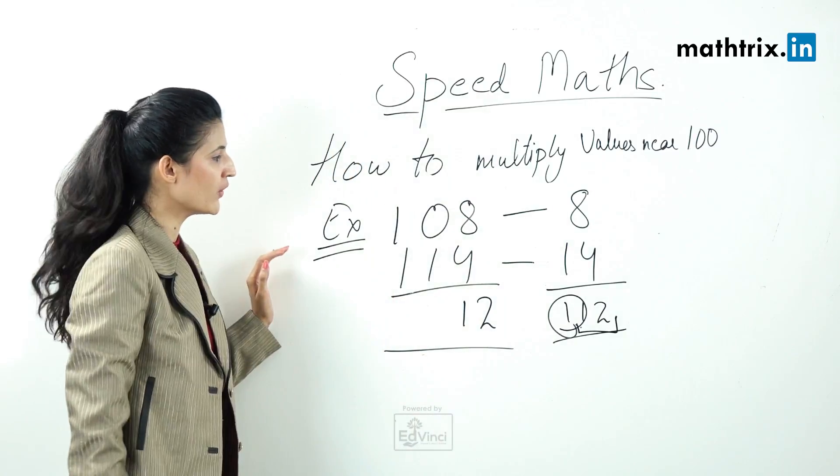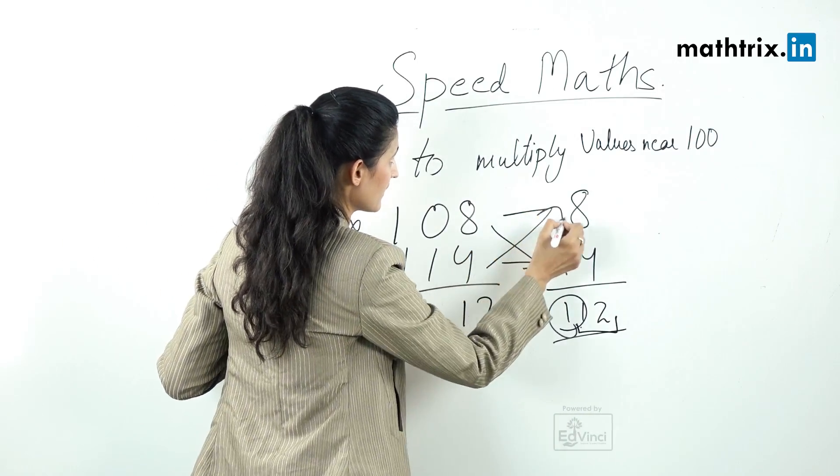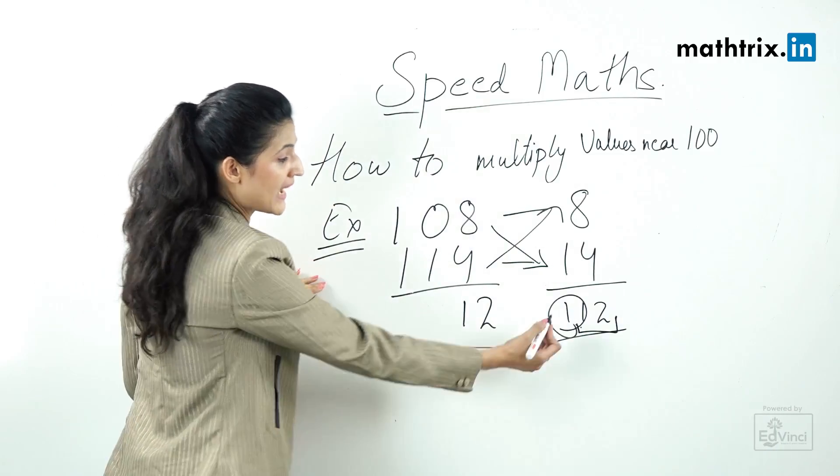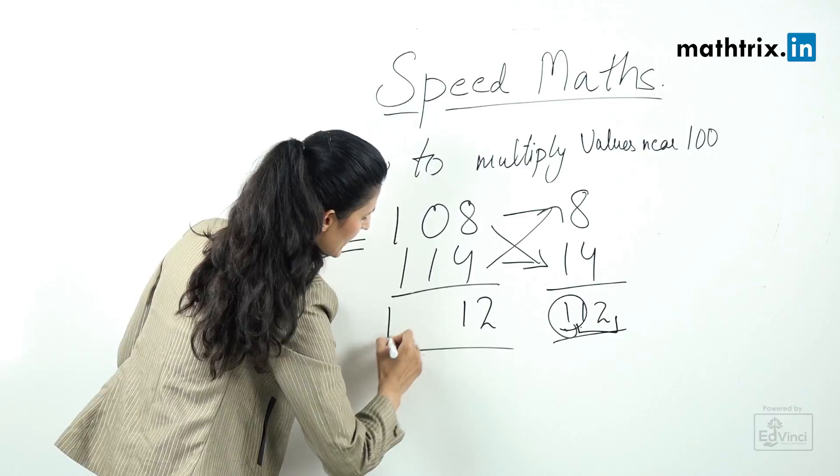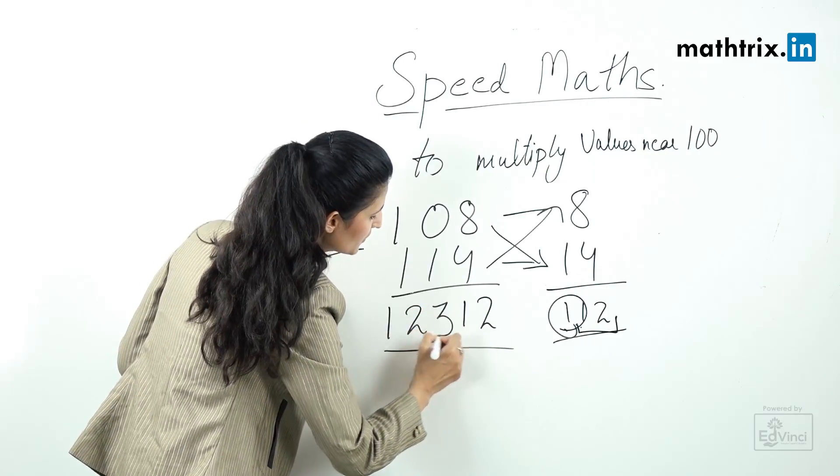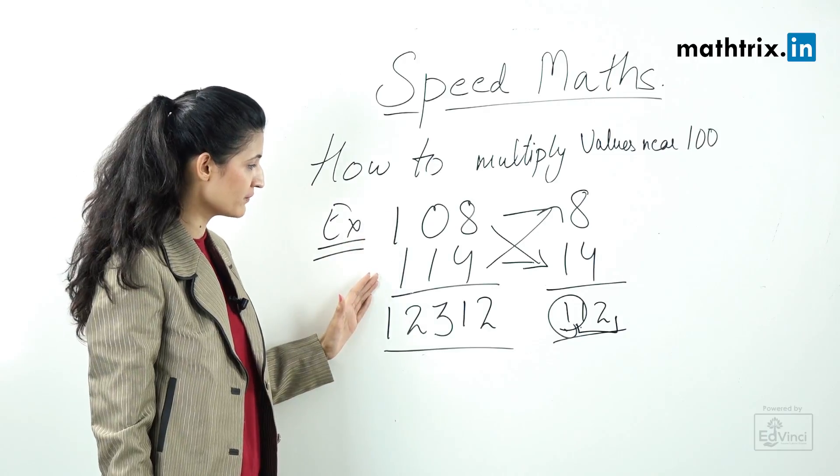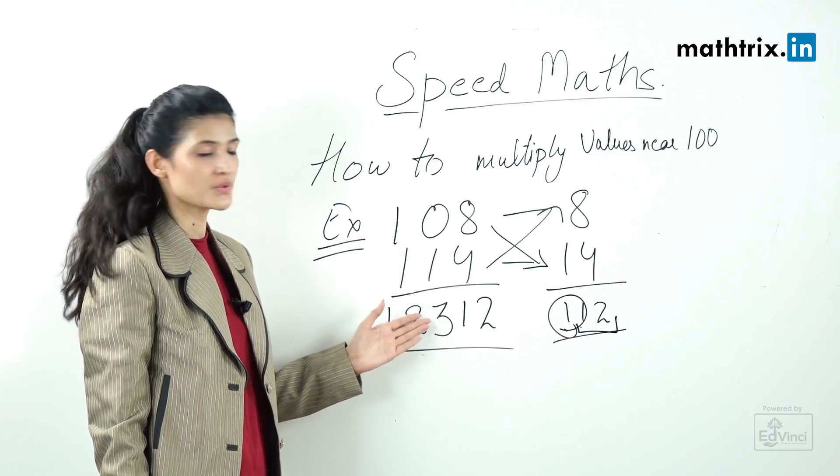Step number 4, we're doing the cross addition. This gives us 122 but we have to carry this 1. So we have to write here 1, 2, 3 and that's your answer for 108 into 114. Our answer is 12312.